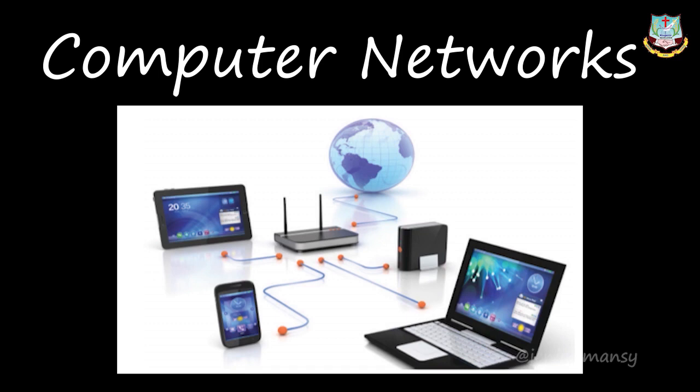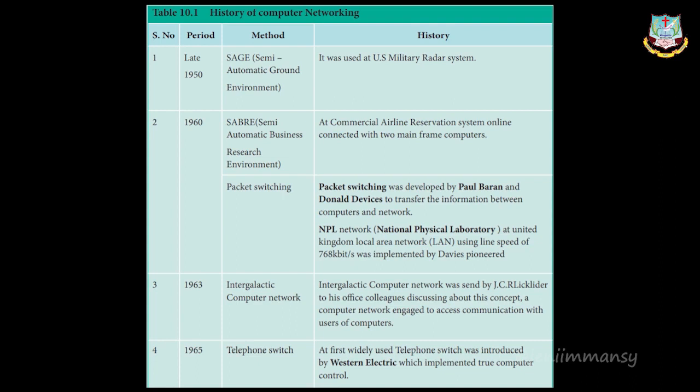Now we are going to see the history of computer network and the internet. In your book on page number 134, they have given a 'Do You Know' section — just read it when you get time. In the late 1950s, SAGE — Semi-Automatic Ground Environment — was used by the US military radar system.